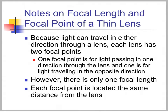Because light can travel in either direction through a lens, each lens has two focal points — one for light passing in each direction. However, there is only one focal length. Each focal point is located the same distance from the lens, just on opposite sides.